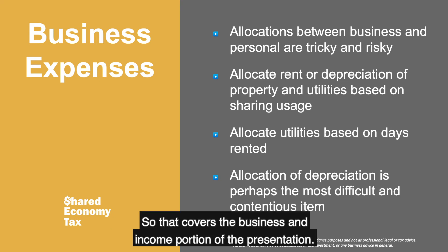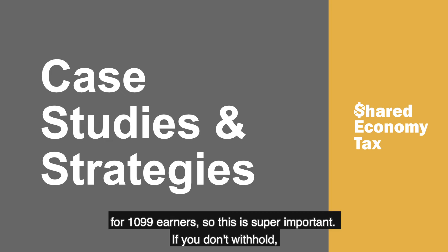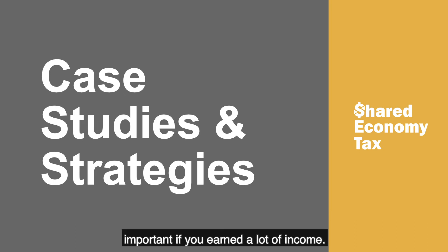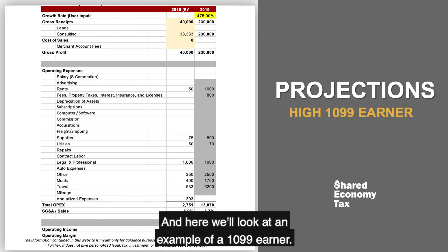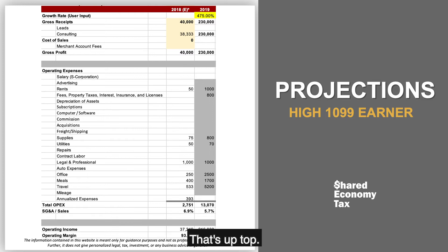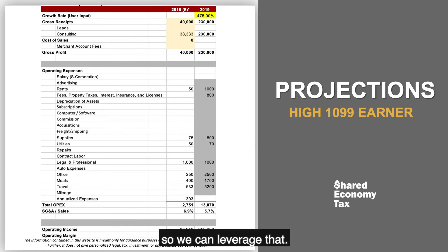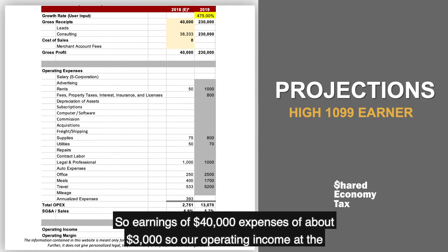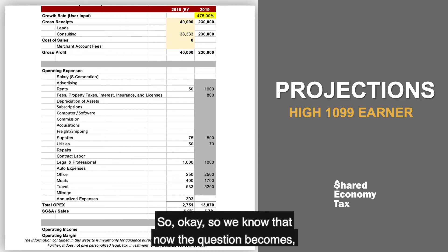That covers the business income portion of the presentation. Now we'll get into some case studies on how to calculate income tax for 1099 earners — super important if you don't withhold, if you've incurred a lot of expenses, or if you've earned a lot of income. Here's an example of a 1099 earner: gross earnings of $40,000, expenses of about $3,000. So operating income at the bottom of that column gets us to about $37,000.